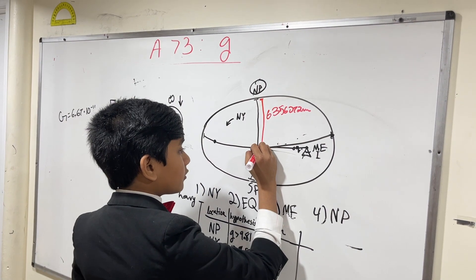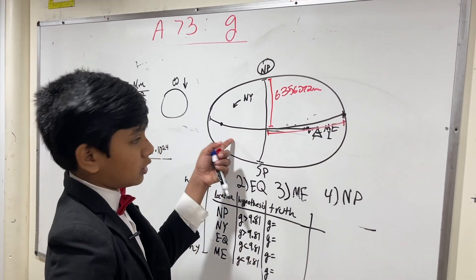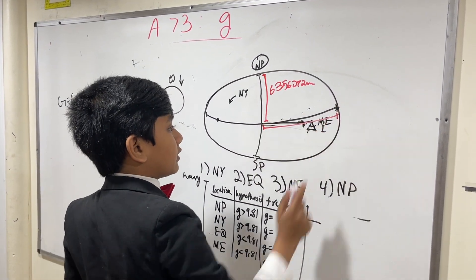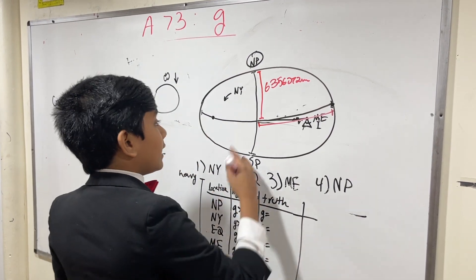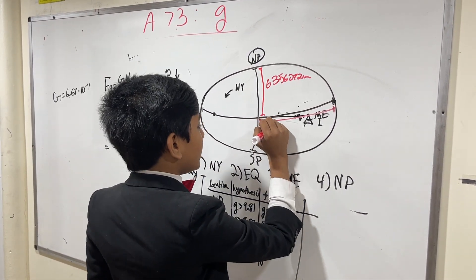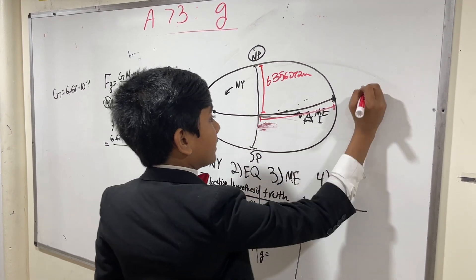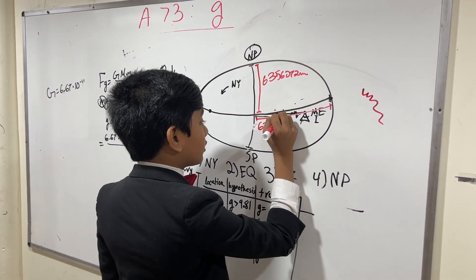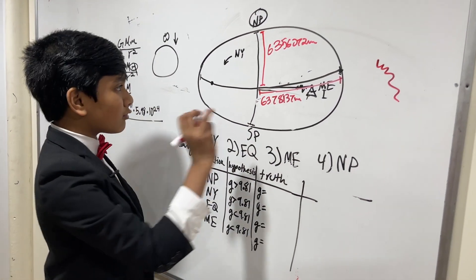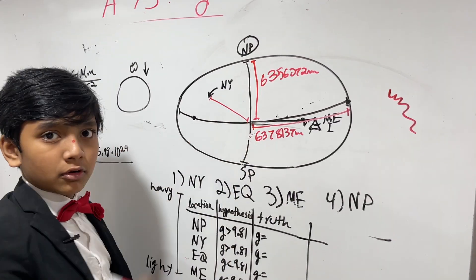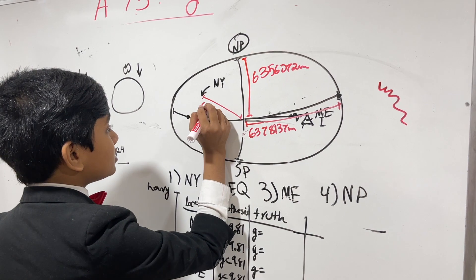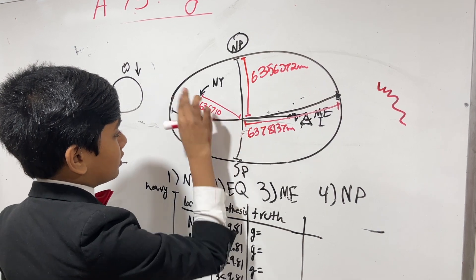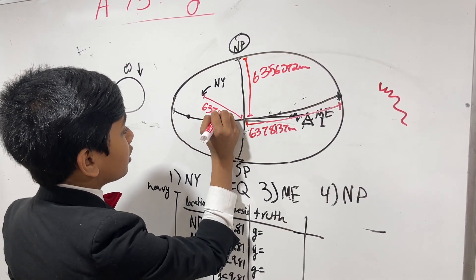The distance from the center of the Earth to the equatorial surface — so from the center to that part of the Earth — is about 6,378,137 meters. And the average distance from the center of the Earth, which we'll also use, is 6,371,071 meters.